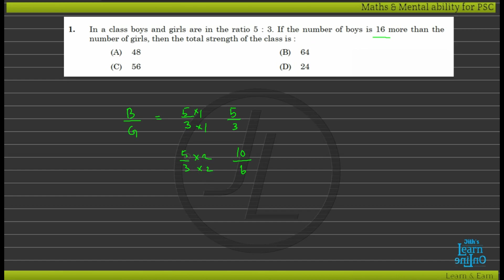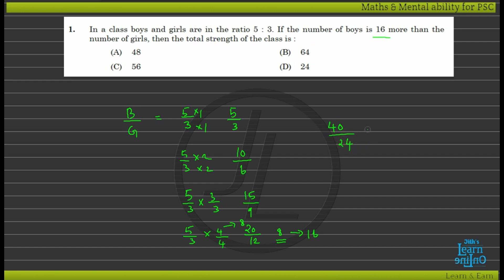If you multiply by 5 and 3, you will get 10 divided by 6. If you multiply by 4 and 3, you will get 20 divided by 12. The difference is 8, and the difference is 14. We multiply by 4. The difference is 14, so boys and girls are 24 and 65 total.